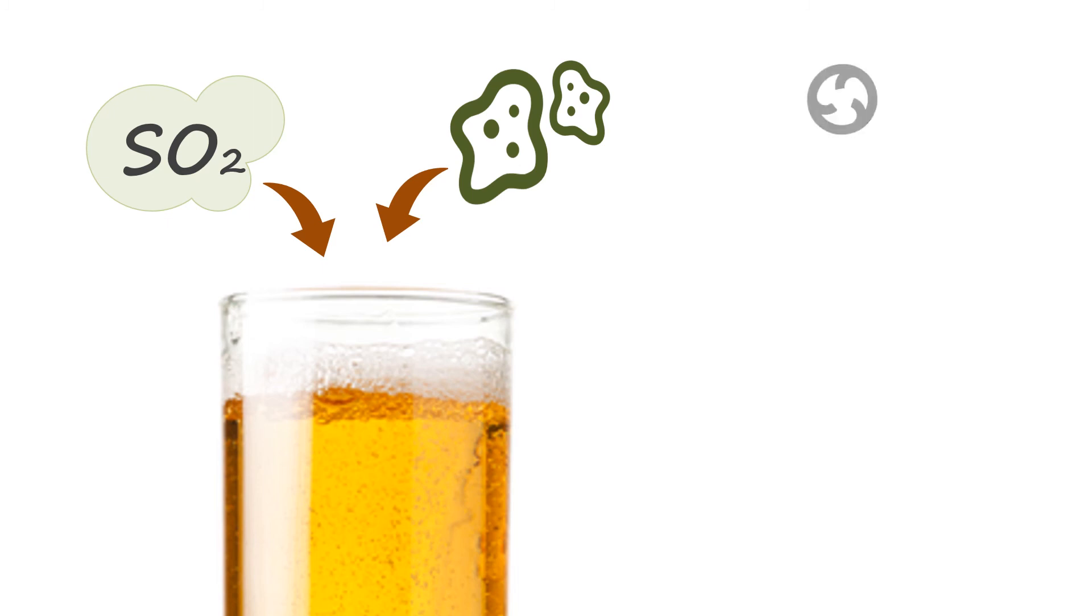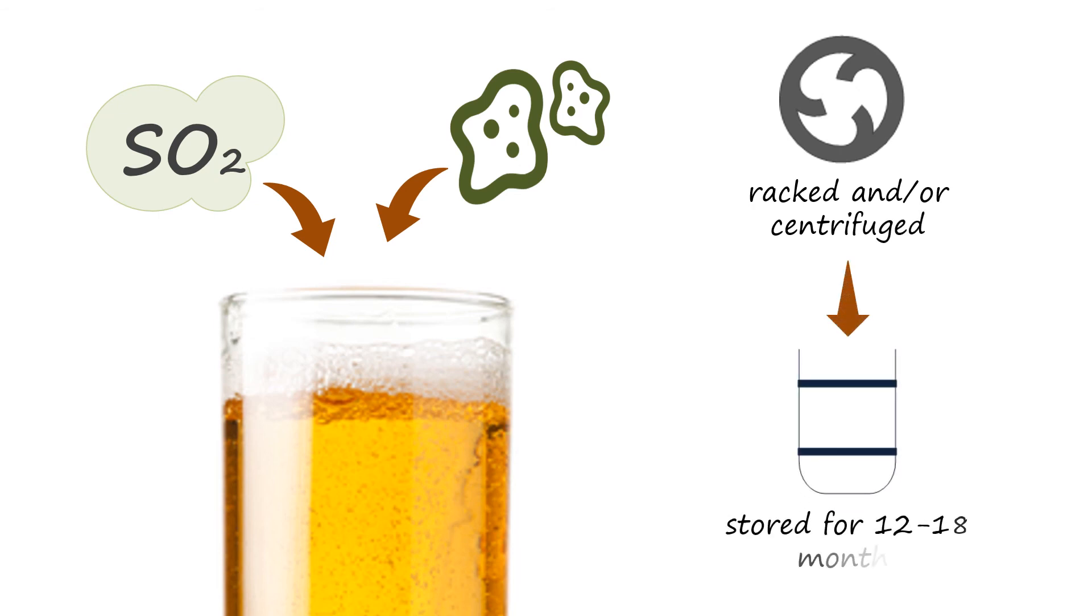In high output commercial operations, the juice is treated with sulfur dioxide to inhibit natural wild yeast and is then fermented with added pure yeast cultures. After initial fermentation subsides, the cider is left until the yeast settles. Then it is racked and or centrifuged and placed in storage tanks for between 12 to 18 months.